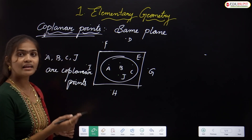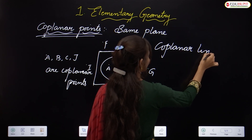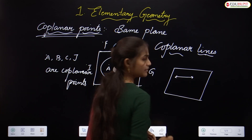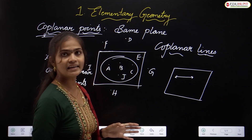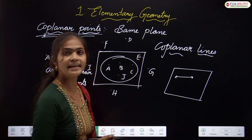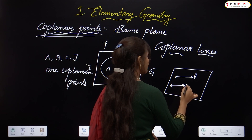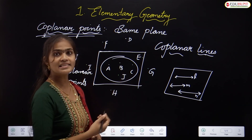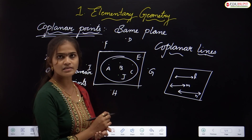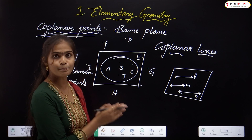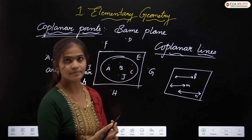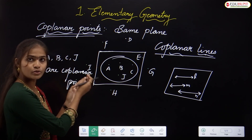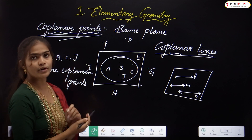Now, co-planar lines: lines which lie in the same plane are called co-planar lines. Here I have straight lines L, M, and N — two or more lines can be taken. Those lines that lie on the same plane are called co-planar lines. Similarly, all points related to the same plane are called co-planar points.